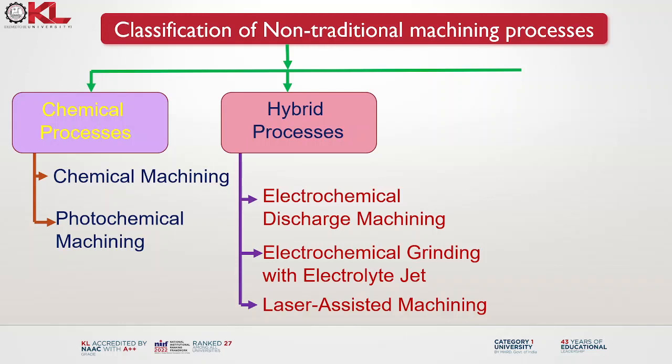It is used for precision machining of conductive materials, particularly those that are difficult to machine using conventional methods. Electrochemical discharge machining finds applications in various industries including aerospace, automotive, medical devices and electronics. It is also used for precision machining of complex components such as turbine blades, fuel injection nozzles and micro components requiring high accuracy and surface quality.